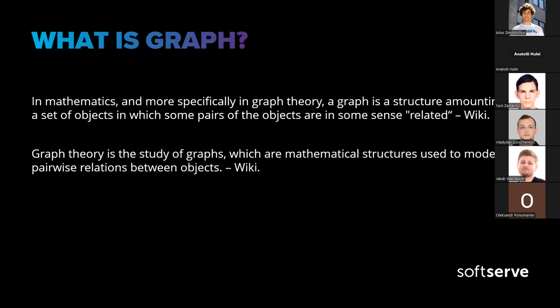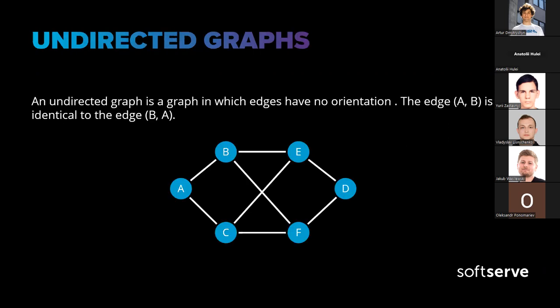There are many types of graphs — let's check the most common ones. The first is an undirected graph, which is a graph in which edges have no orientation. This means that edge AB is identical to edge BA.